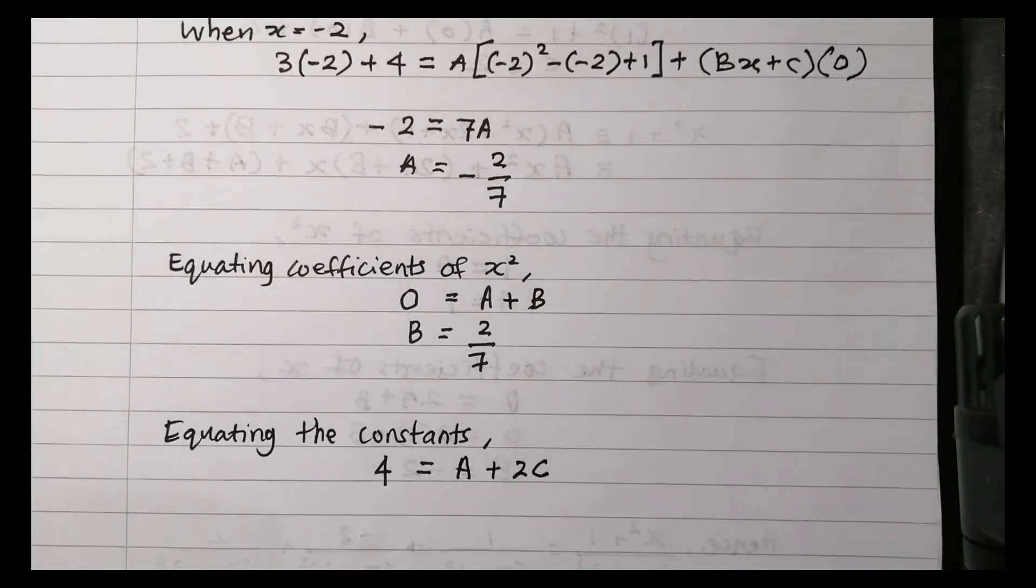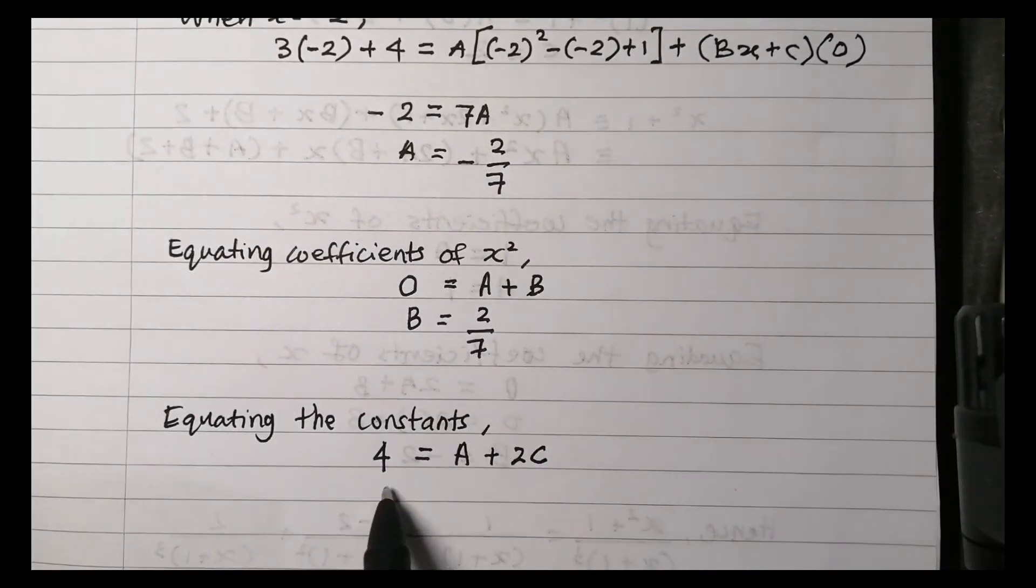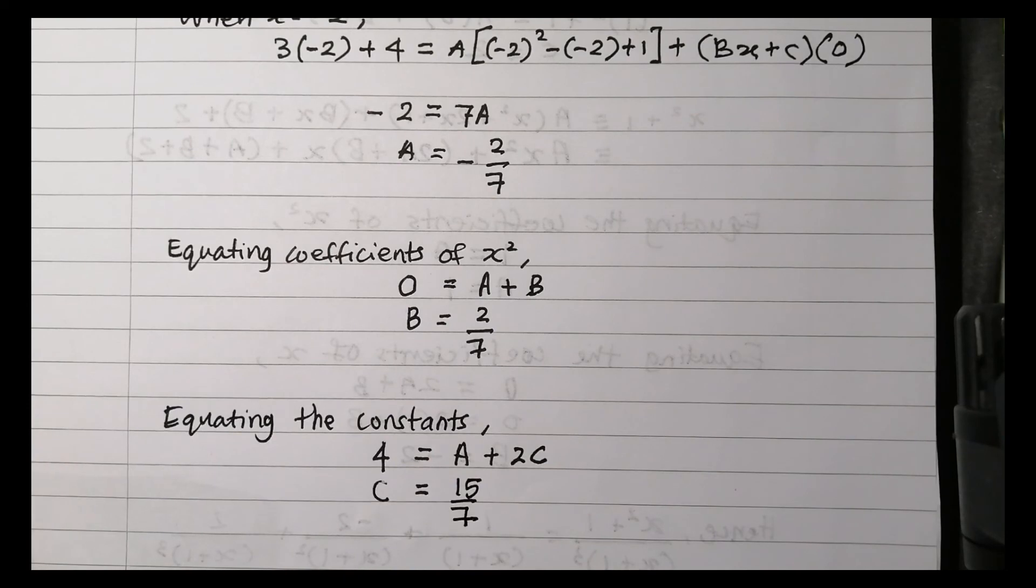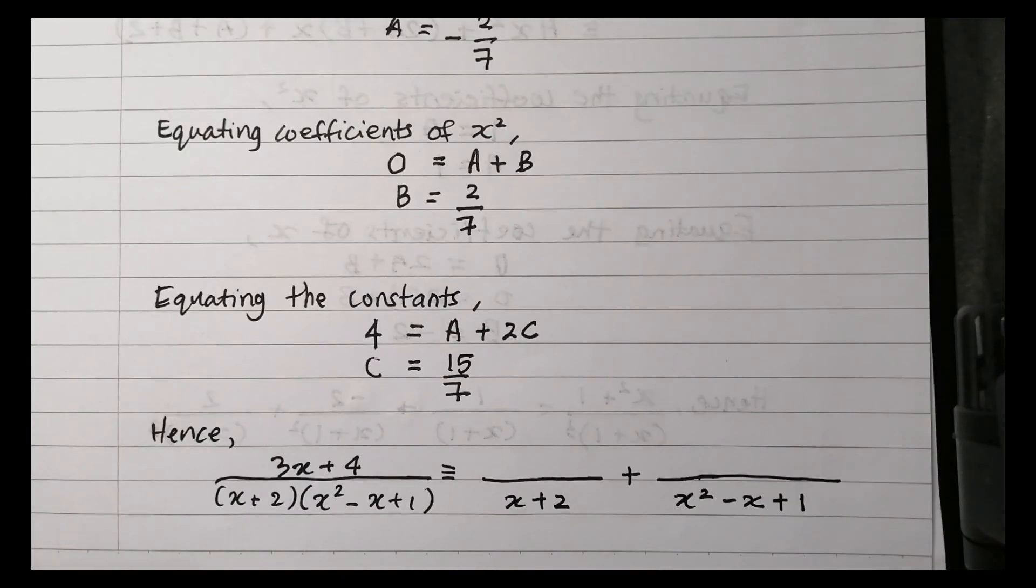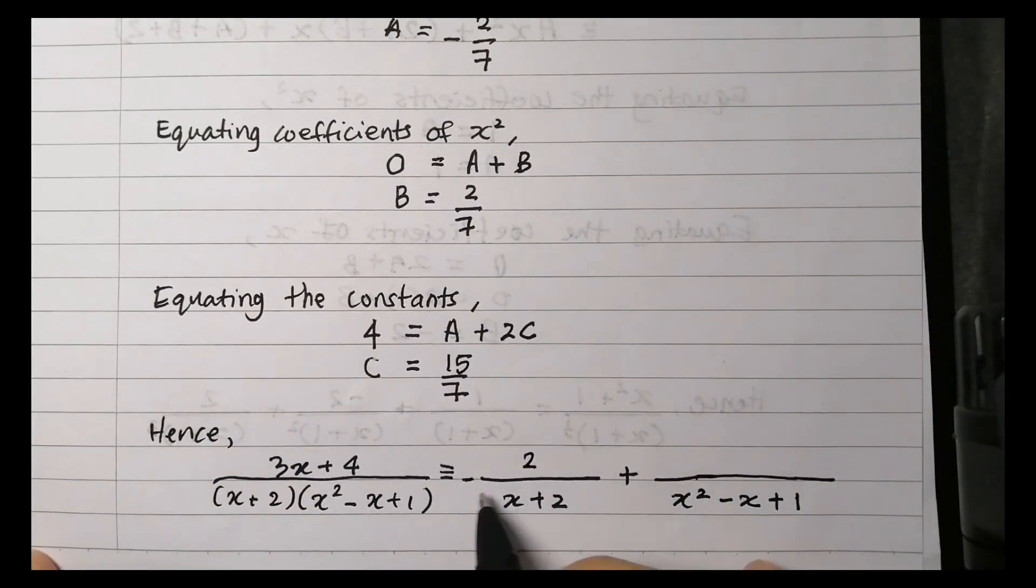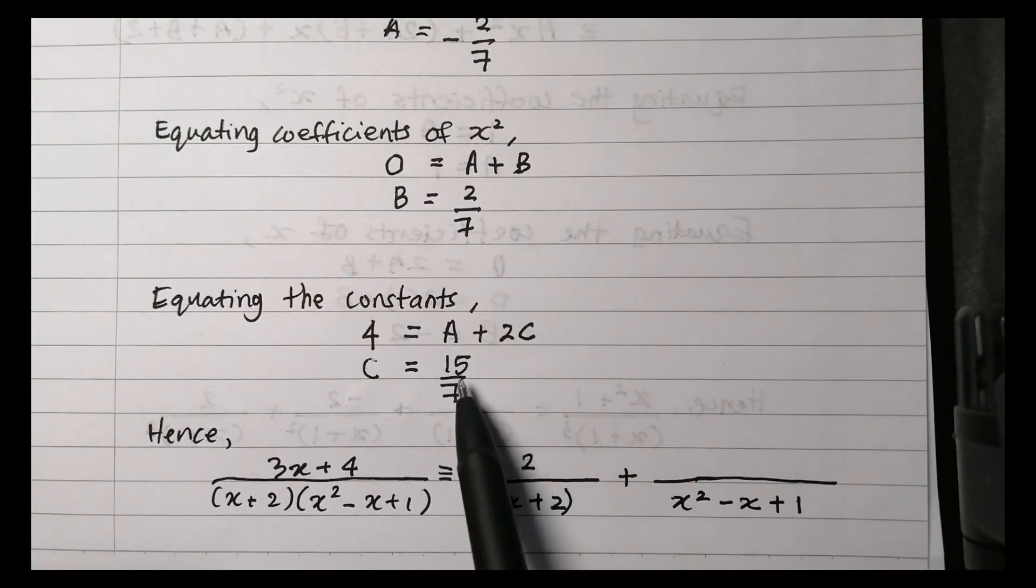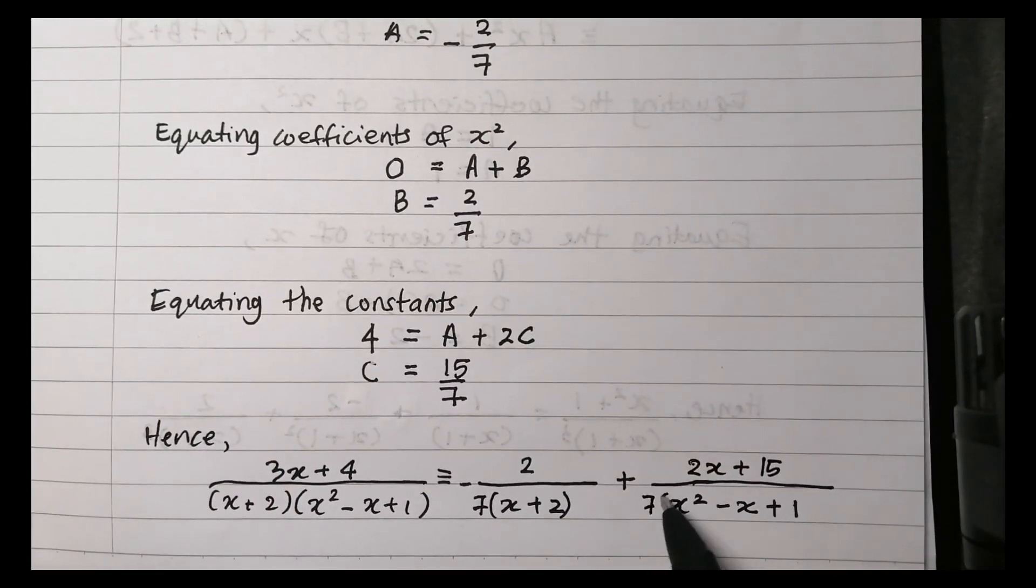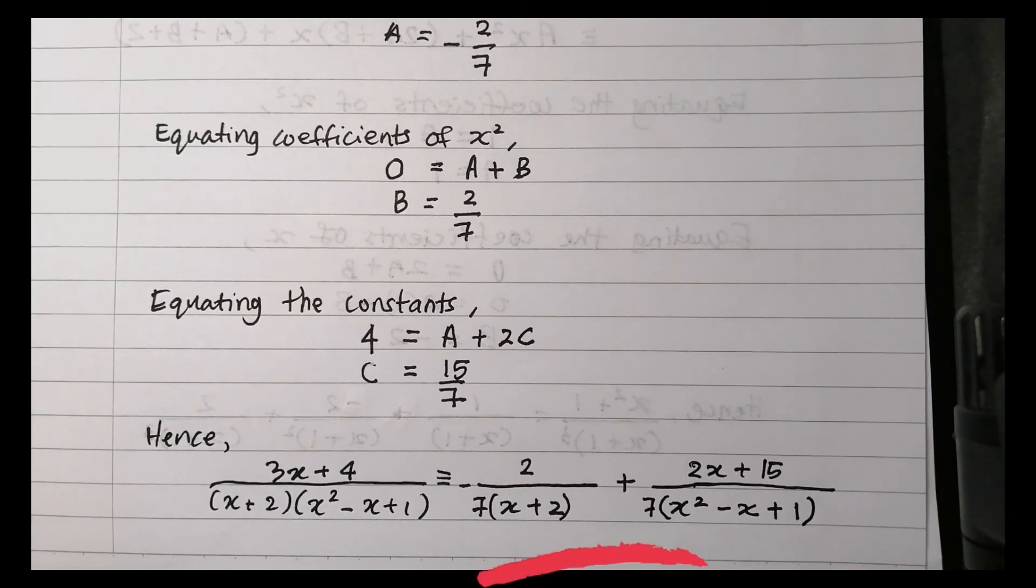Using the value of A, we can find the value of C is 15 over 7. Then substitute all the values of A, B, and C to express the rational function into partial fractions.